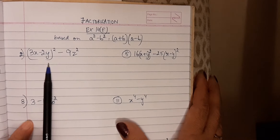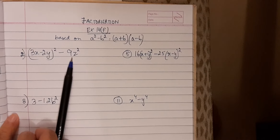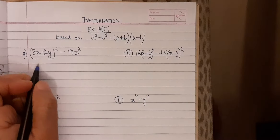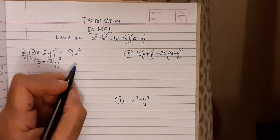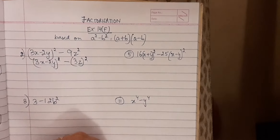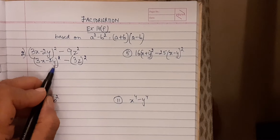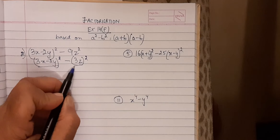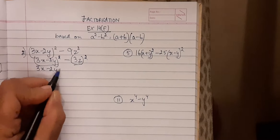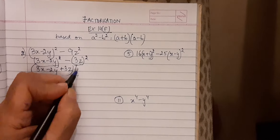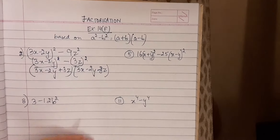Now the question says factorize. I am taking up the second question: (3x - 2y)² minus 9z². You are going to write 9z² as the square of 3z, that is (3z)². Now this complete binomial (3x - 2y) is the value of a and (3z) is the value of b. So the factors are (a + b)(a - b), giving us (3x - 2y + 3z) as one factor and (3x - 2y - 3z) as the other factor.